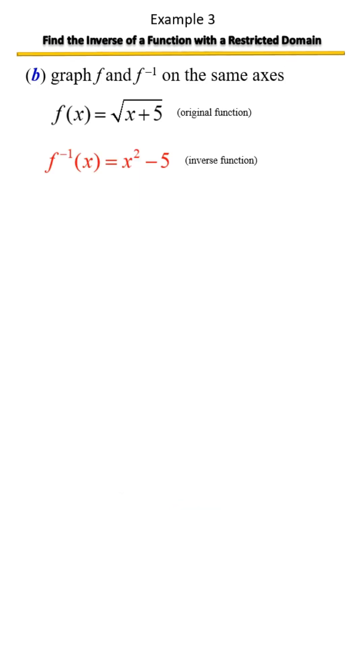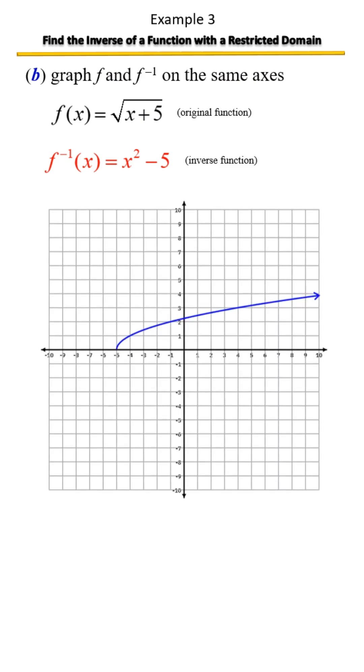Now we're going to graph the function and its inverse on the same axes. We'll start with the original function. Notice this is the parent function, the square root function that has been shifted 5 units to the left. So we're going to go ahead and sketch that graph.